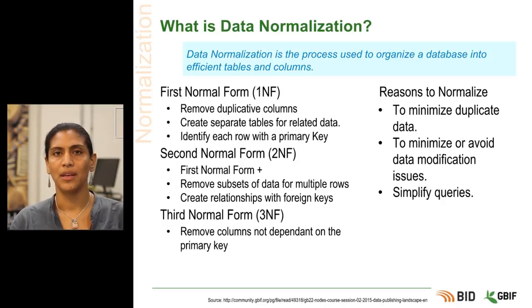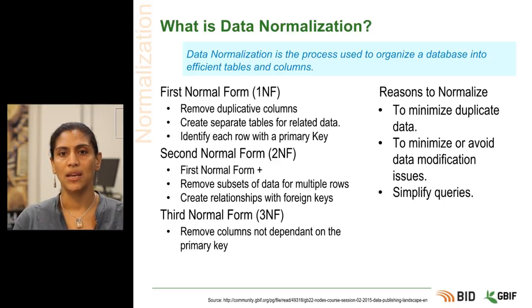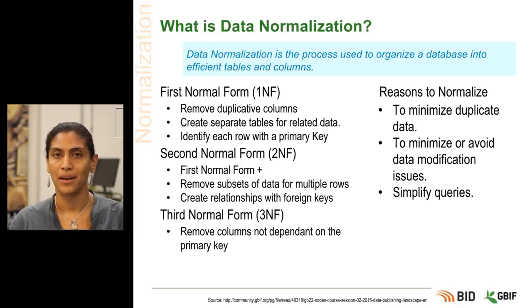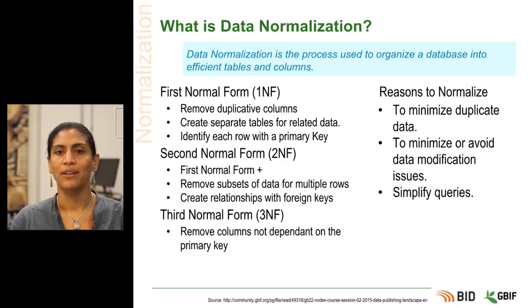Giving each row in a lookup table its own unique ID or primary key is the second companion step. The second normal form, 2NF, involves further refining of lookup tables.